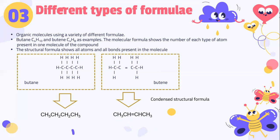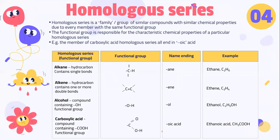Let's look into homologous series. A homologous series is a family or group of similar compounds with similar chemical properties, which is due to every member having the same functional group. The functional group is responsible for the characteristic chemical properties of a particular homologous series. For example, alkane — the functional group is a single bond (C-C). The name ending for alkane is -ane, and the example given is ethane, C2H6.